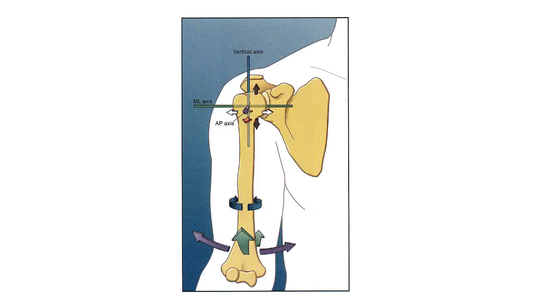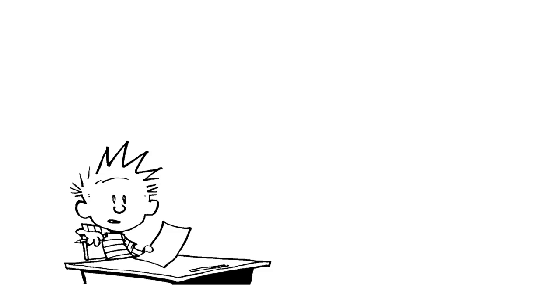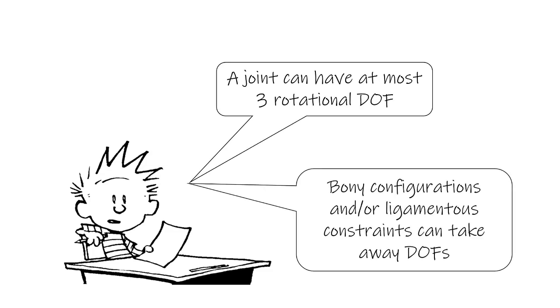Now let's take a look at degrees of freedom. Think of degrees of freedom as a movement choice — if you can't move, you don't have a choice; if you can move in two directions, you have one choice. In this course, we will only concern ourselves with rotational movement. Since there are three planes of movement, there are up to three degrees of freedom for each joint. Bony configurations and ligamentous constraints can remove degrees of freedom and thus movements in a plane.